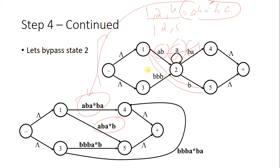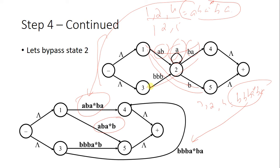There are also two paths from state 3: one from 3 to 4, and one from 3 to 5. The expression for 3 to 5 will be A-star, A, B. This is how you can eliminate states.